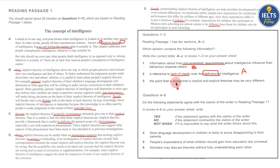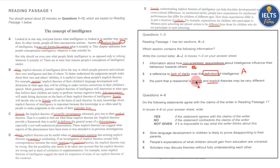Finally, question three: 'the point that a researcher's implicit and explicit theories may be very different.' It's either going to be C or D. I had to guess here, but it is clear — in D it says that implicit theories and existing explicit theories are wrong or misleading. That's the paragraph where it talks about 'implicit' and 'explicit,' so that gives you D. I'm not understanding a lot of this — all I'm doing is looking at key words in the text and to a certain extent hoping for the best, just picking out words and matching them. The same goes for the yes, no, not given questions coming next.